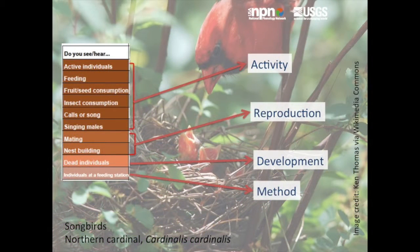Similarly, as in this example of the Northern Red Cardinal, the database provides definitions not only for presence and absence, but for activity, reproduction and development, and method, such as whether or not the bird was spotted at a bird feeder. Again, the observer may answer only that with which they are comfortable to ensure the most accurate observations possible.